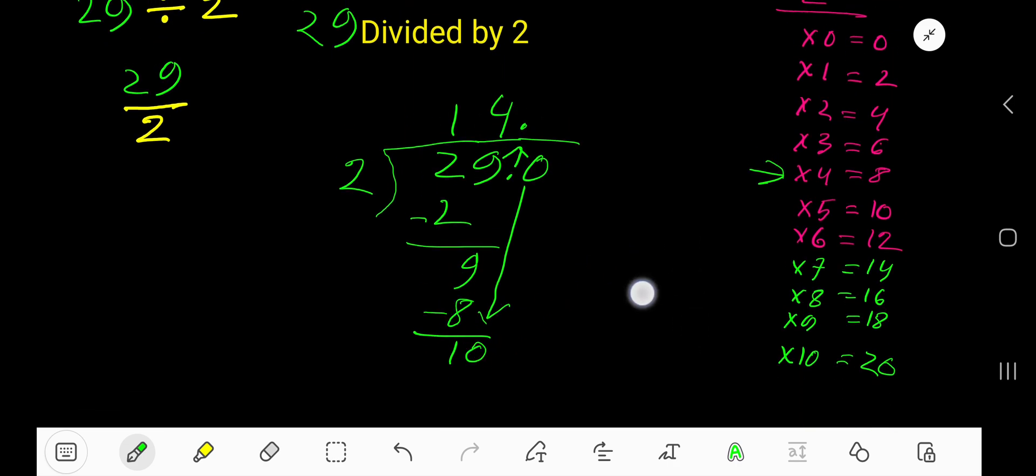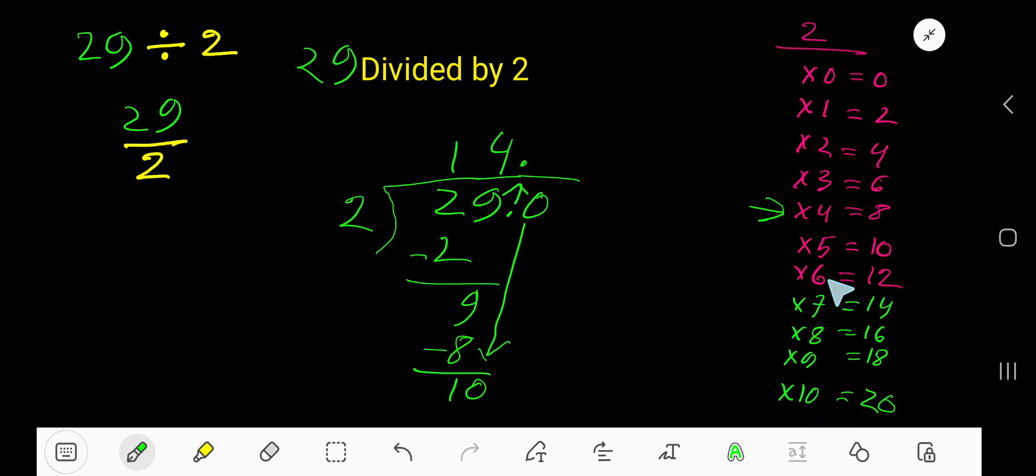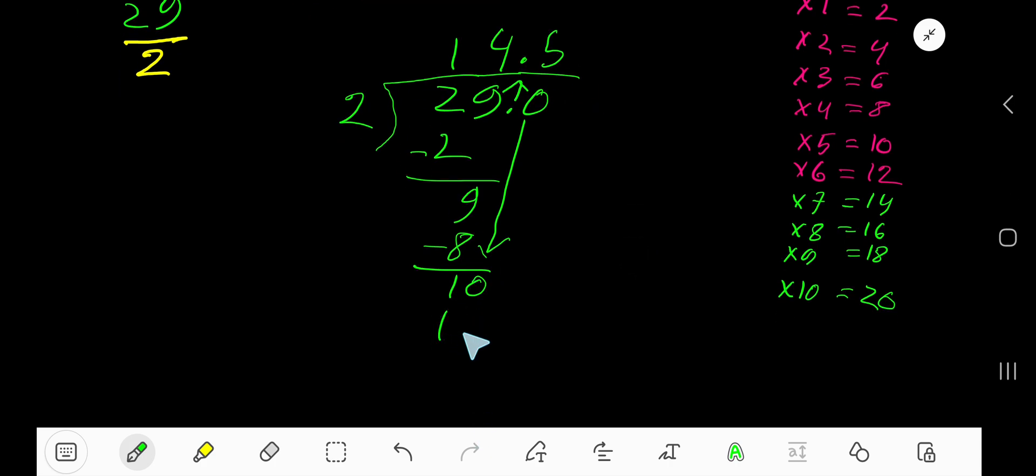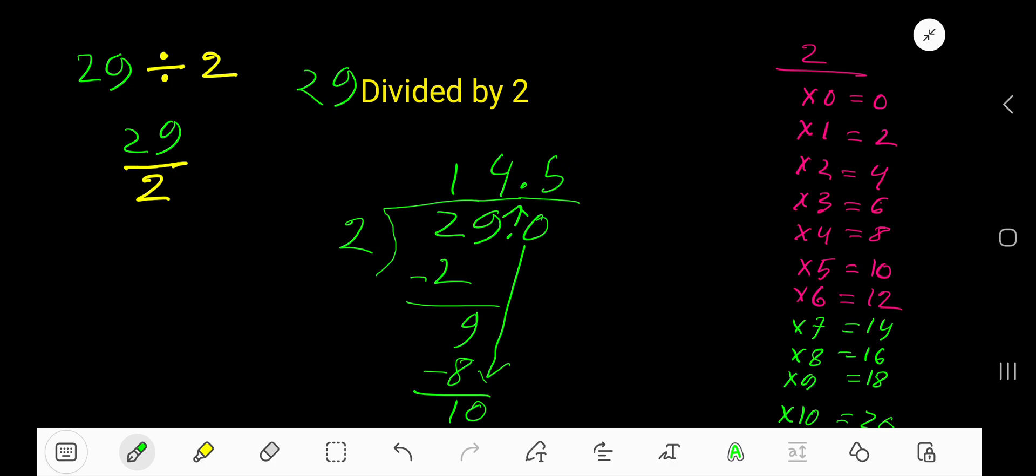2 goes into 10 how many times? 2 goes into 10, 5 times. 5 times 2 is 10. Subtract. 0. That is, 14.5 is your answer.